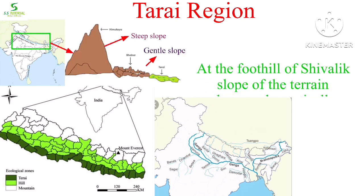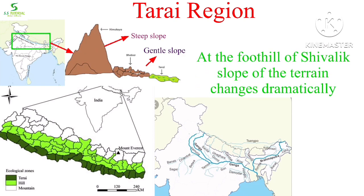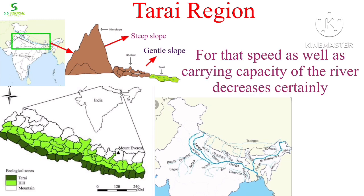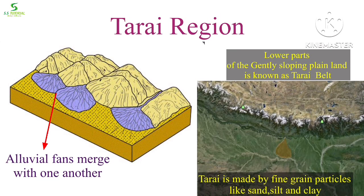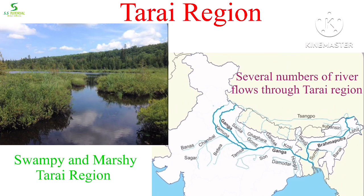Several perennial and seasonal rivers descend from the Himalayas. At the foothills of the Siwalik, the slope changes dramatically, reducing the speed and carrying capacity of the rivers. As a result, rivers deposit their load and form alluvial fans. The lower part of this alluvial fan, made mainly of fine-sized alluvium like silt, sand, and clay, is known as Tarai. As many rivers and streams flow over this region, it becomes marshy and swampy.